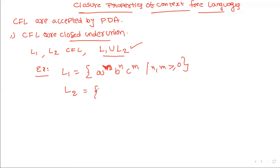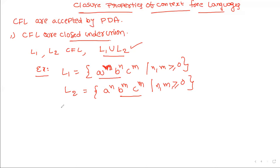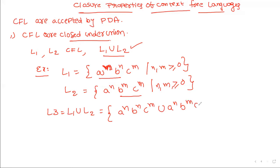Suppose L2 is the language A^N B^M C^N, where N, M ≥ 0. From L1 we are forming equal number of A's and B's; from L2 we are forming equal number of B's and C's. If we construct L3 = L1 union L2, then the language is {A^N B^N C^M} union {A^N B^M C^M} for all N, M ≥ 0. This is also a context-free language.